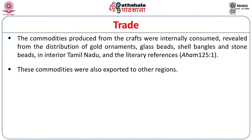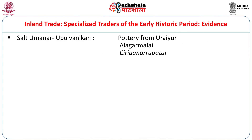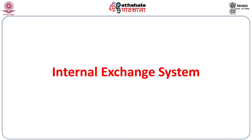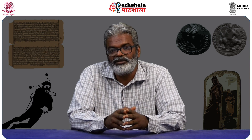We have clear evidence for inland trade. People were trading a number of goods inland, reflected in inscriptions and literature that mention different kinds of merchants — salt traders (womaner), jaggery traders (upu vanigan), iron traders, gold traders, bead traders, and textile traders. The internal exchange system is one of the most important components, being very important even for the overseas exchange system.